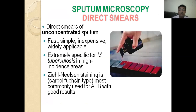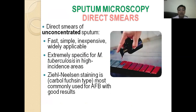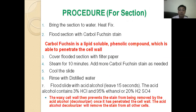We can also use AFB staining method on sputum microscopy. The reason is that direct smears of unconcentrated sputum can be used — they are fast, simple, inexpensive, and widely acceptable. They are extremely specific for Mycobacterium tuberculosis in high-incidence areas. Ziehl-Neelsen staining is most commonly used for AFB with very good results. Now the procedure: